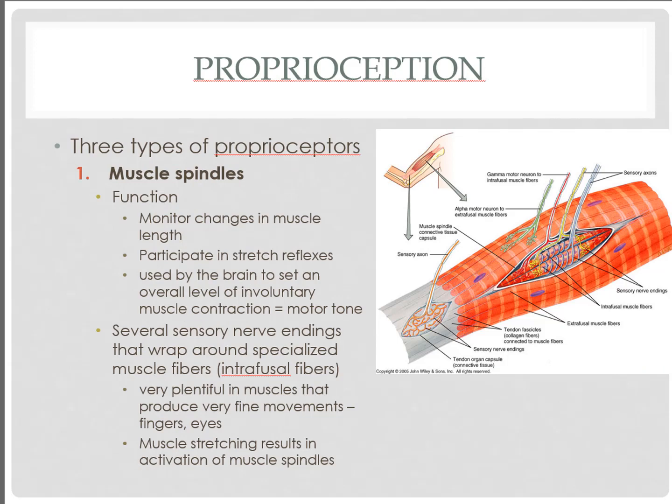Muscle spindles are located within the muscle fibers themselves and run in parallel to each of the contractile muscle fibers. These muscle spindles monitor changes to the actual muscle length. As a muscle starts to stretch, a muscle spindle detects changes in length and can generate an action potential sent to the brain or cerebellum. Changes in muscle length can tell us the degree of muscle contraction taking place.